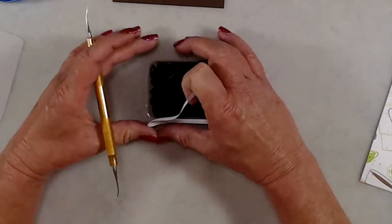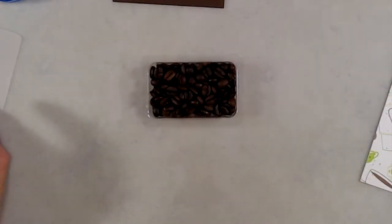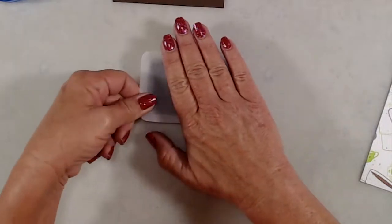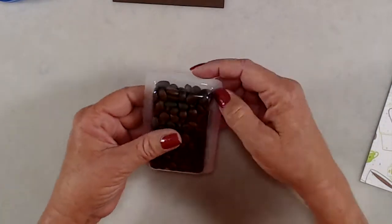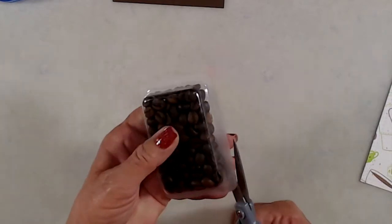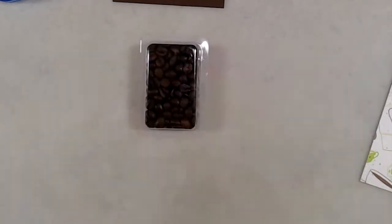Once I had my coffee beans in my bubble, I removed the release paper and I placed a piece of vellum over the back side of that. Again, all I did was trace around the bubble and then just did a rough cut around it, and then used my scissors to trim off any of the excess vellum that was showing through. Off camera, I had used the Coffee Break stamp set to stamp a background.